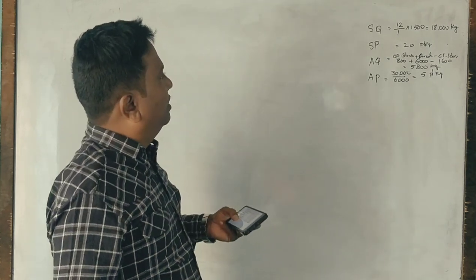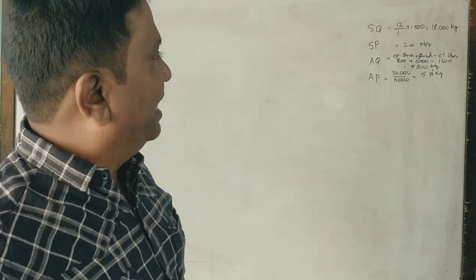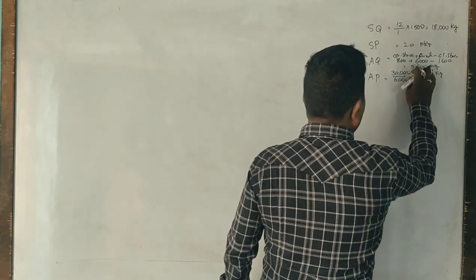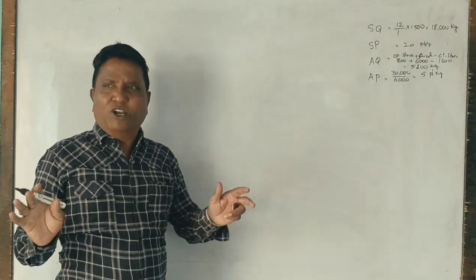Now, 6,800 minus 1,600 is 5,200 kg. If the problem is nowhere connected, still we have to work on it. 5,200 kg.